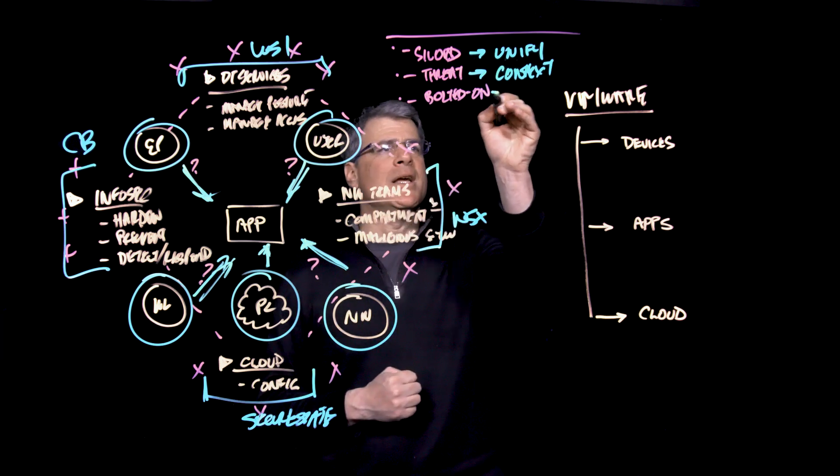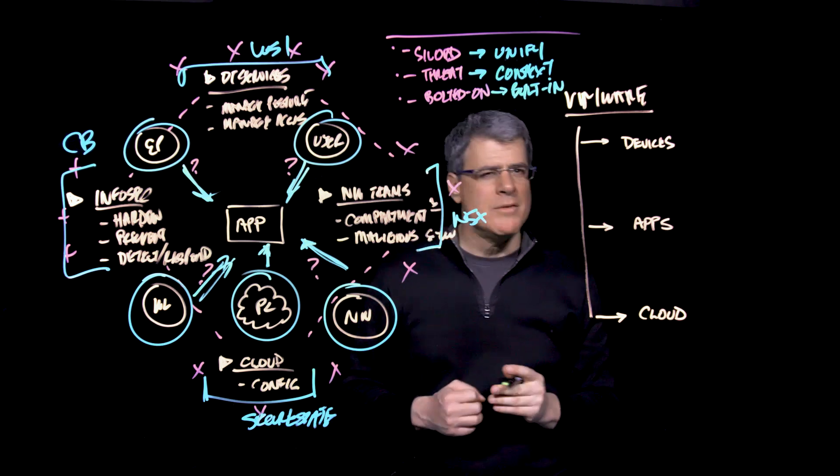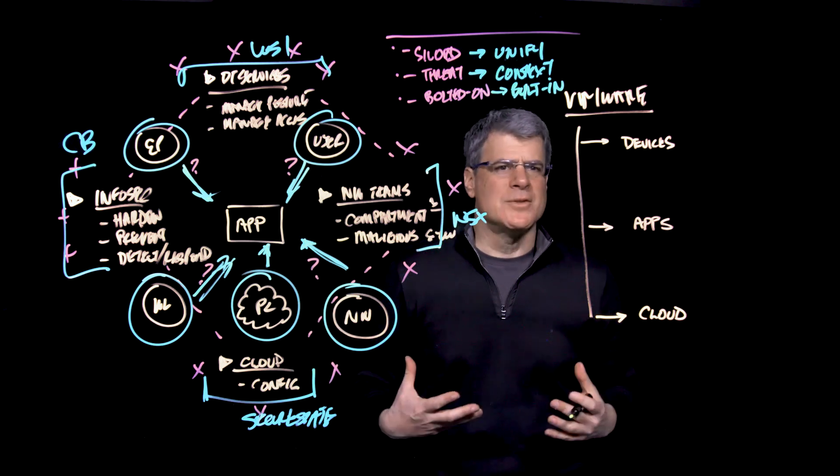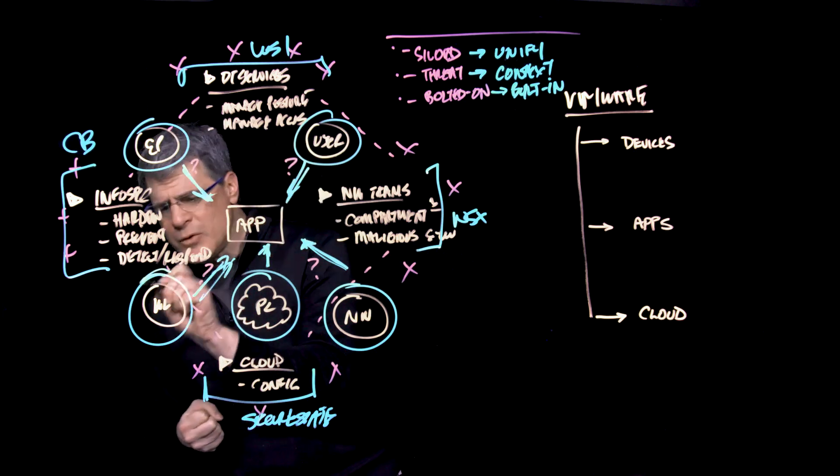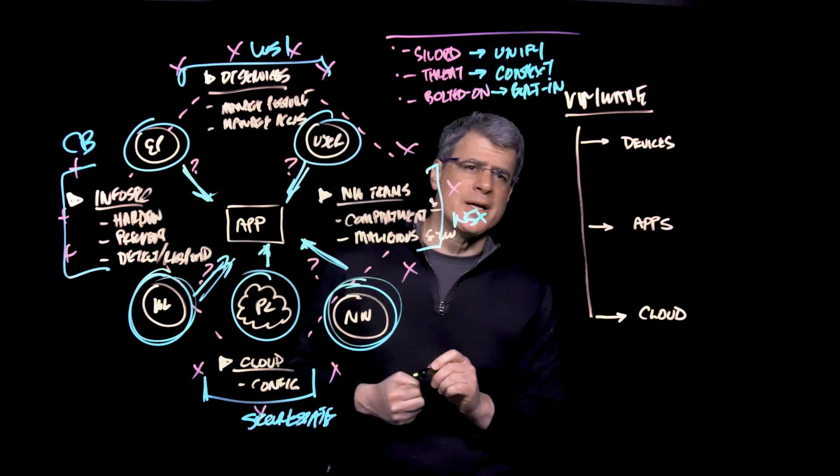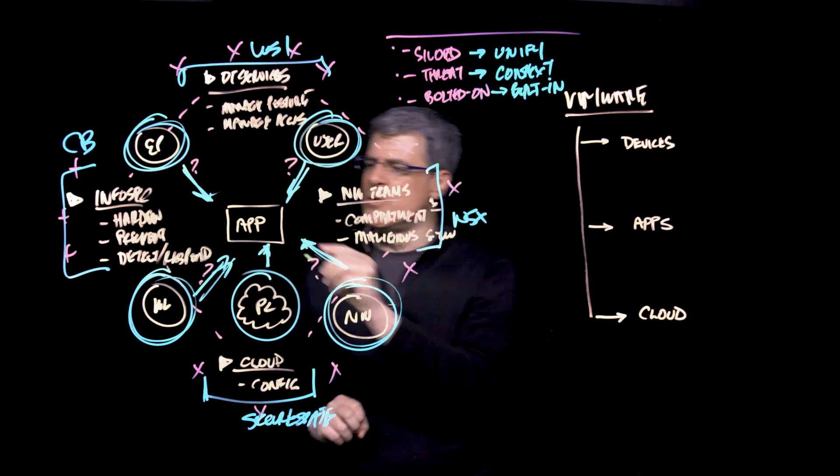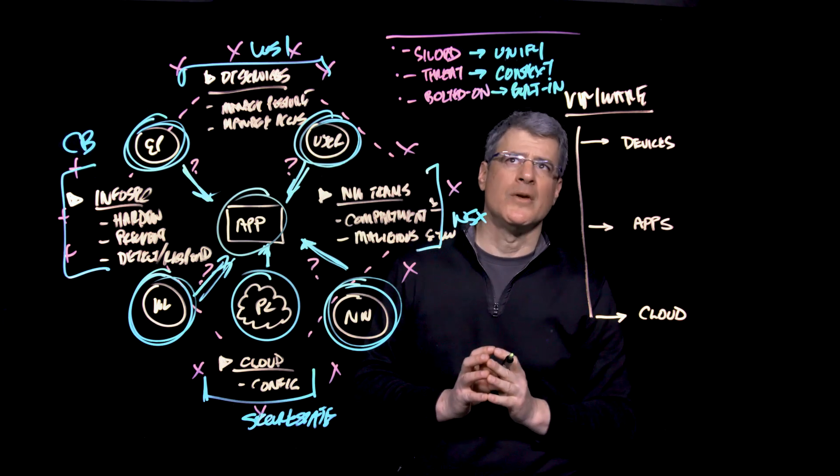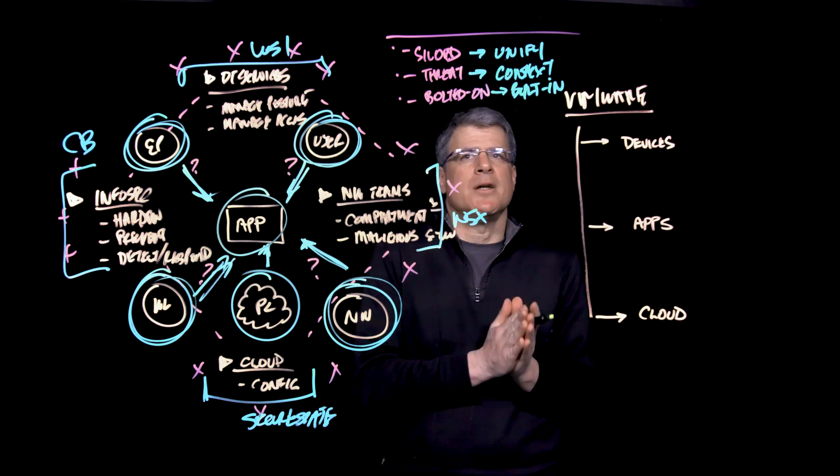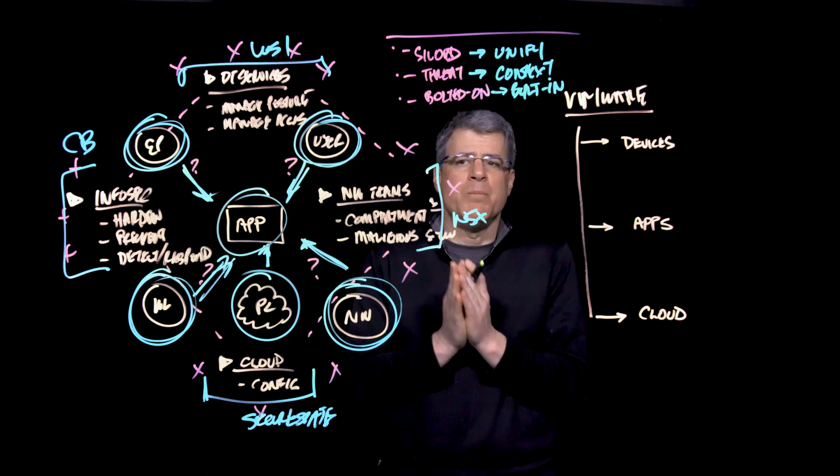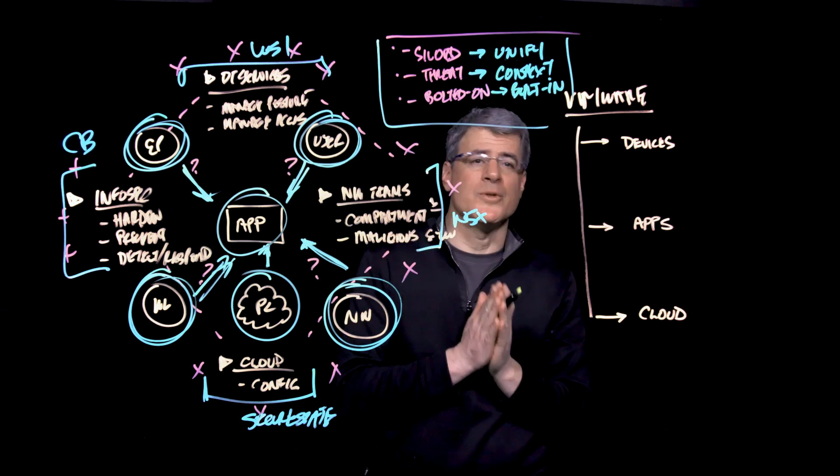And lastly, it allows us to make security far more built-in. Getting rid of agents, getting rid of all the appliances by being able to build into vSphere, into NSX and the virtual switches, into the management platforms for the devices and for the users, and build even into the applications themselves. This shift from siloed to unified, from threat-centric to context-centric, from bolted on to built-in, is really the elements that is allowing us to really fundamentally transform security.